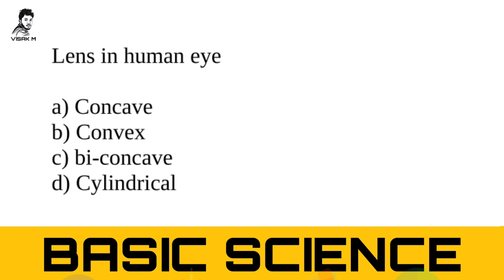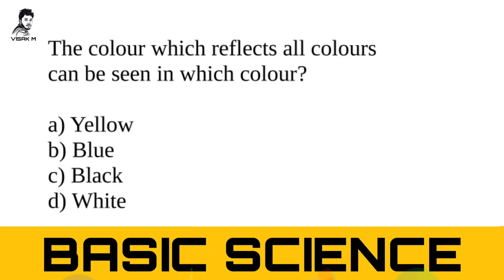Next question: what type of lens is found in the human eye? You have learned about so many lenses in your standard itself. Option A: concave lens. Option B: convex lens. Option C: biconcave lens. Option D: cylindrical lens. The right answer is option B — convex lens. A convex lens is found in the human eye.